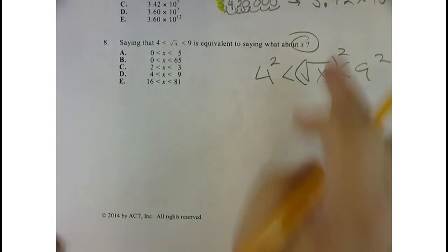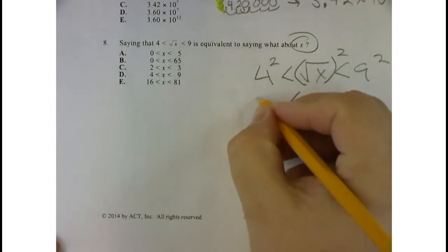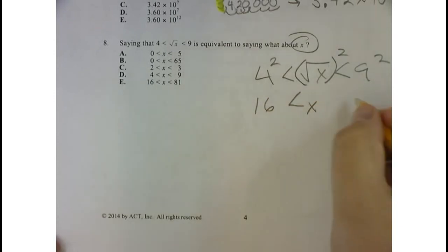So when I square a square root, I'm left with the base. And then I have 4 squared, which is 16. And then I have 9 squared, which is 81.